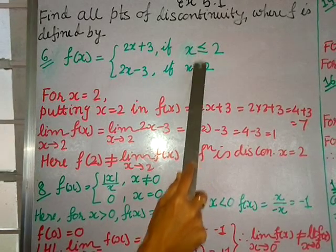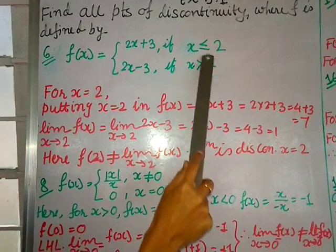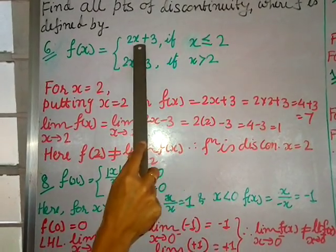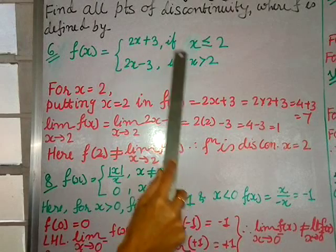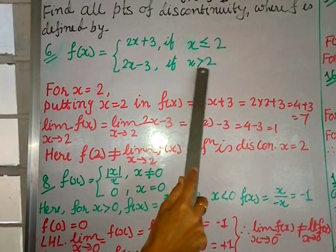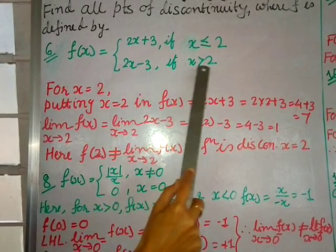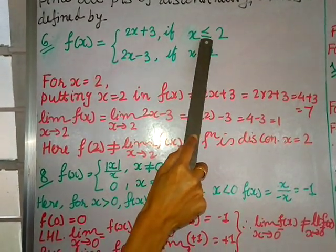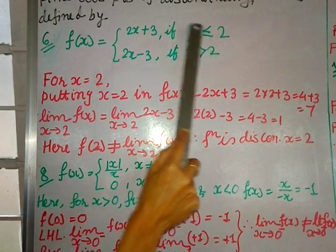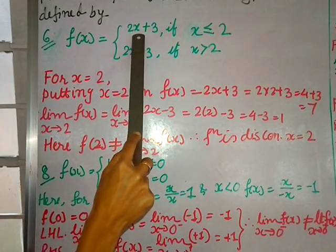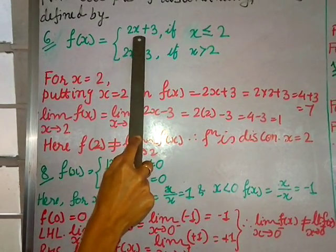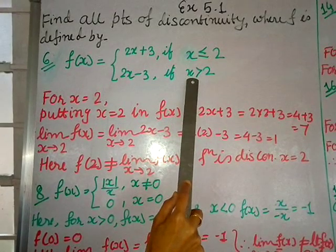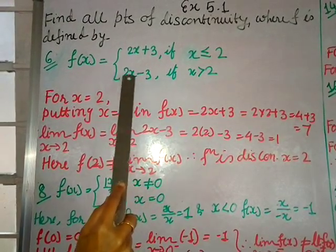Where there is an 'equal to' sign, for x = 2 I will use that function to find f(c). For the limit, I will use the function without the equal-to sign. Remember: where the equal-to sign is present, use that function for the value f(c); where there is no equal-to sign, use it for the limit.